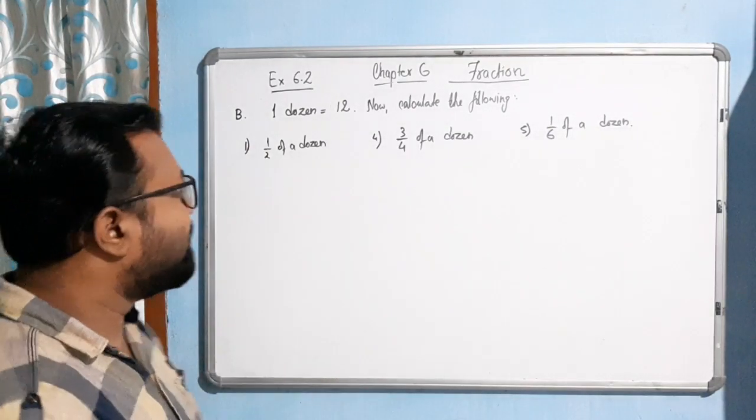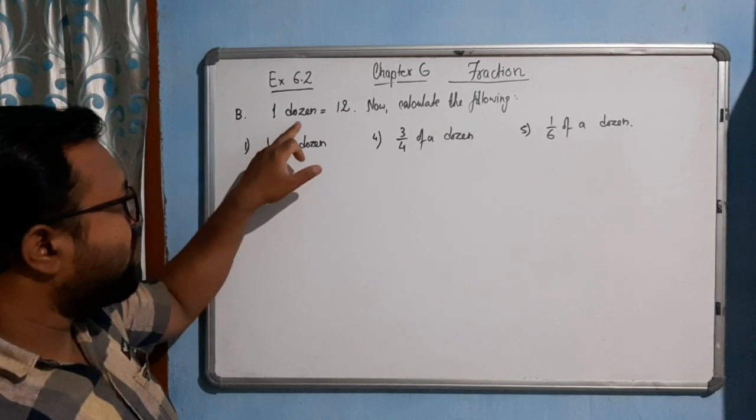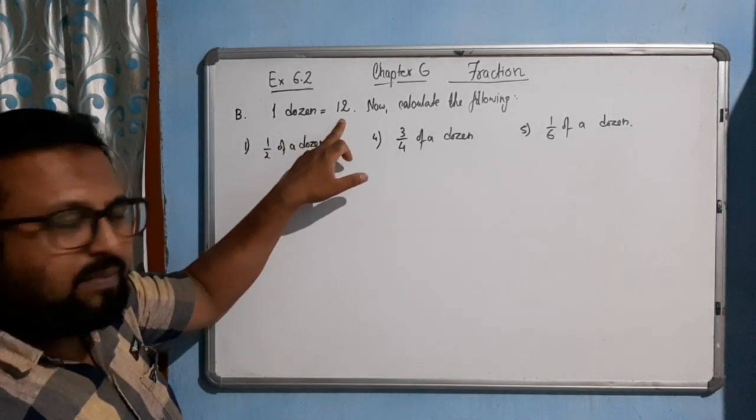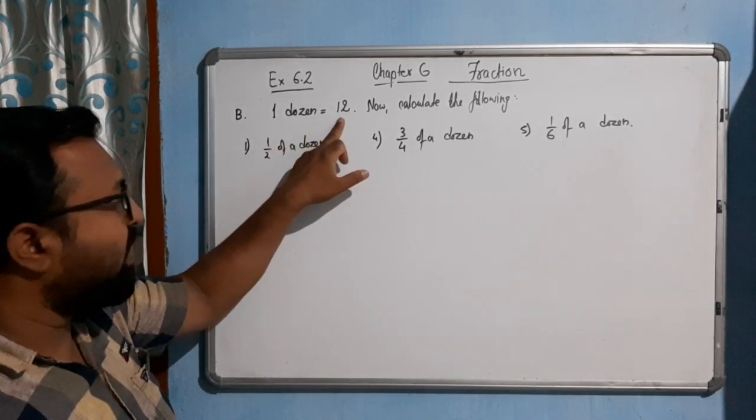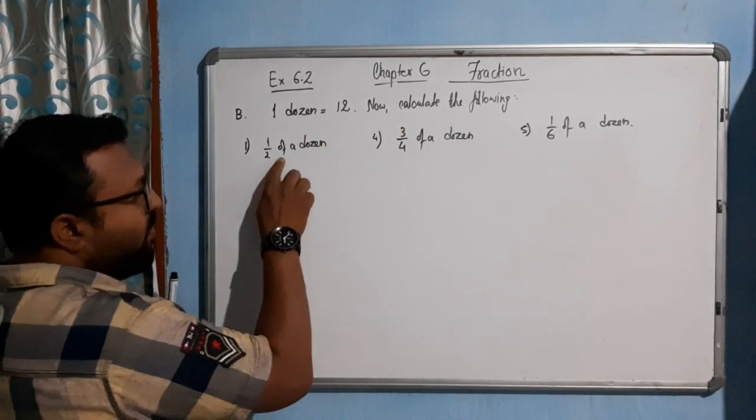Hello students, now come to the next question of the exercise, question number B. It is given: one dozen equals 12. Okay, means the dozen means 12 numbers, is that clear? Now calculate the following: here, half of a dozen.